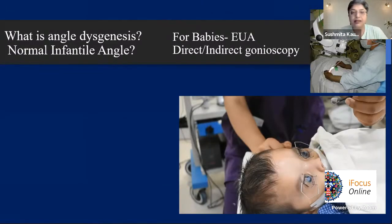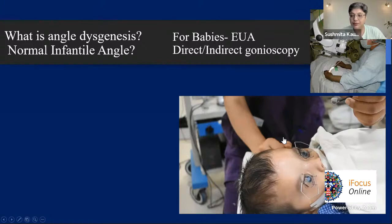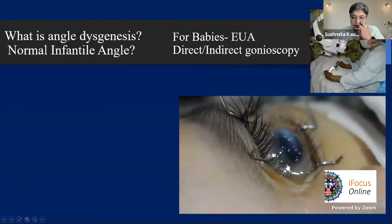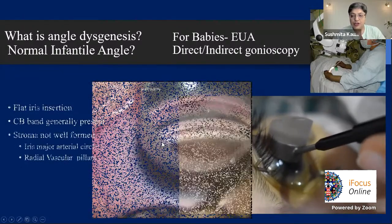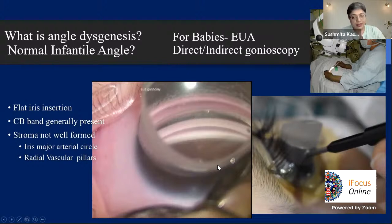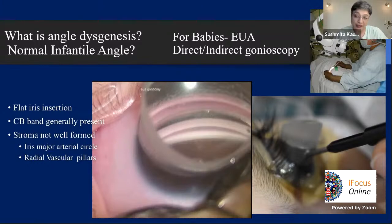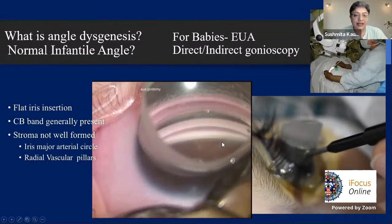What is angle dysgenesis? To understand it, we need to know what a normal infantile angle looks like. In a small baby this is the setup for gonioscopy using a direct gonioscope — a small Jacob lens placed gently on the cornea and viewed through the microscope. When you do cataract or squint surgery, just put in a gonioscope to get a feel of the normal angle, so it's easier to diagnose dysgenesis when present.